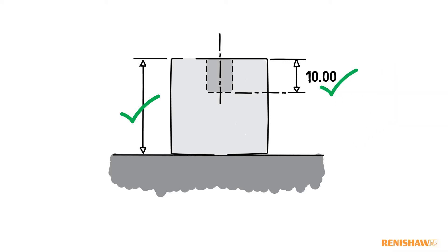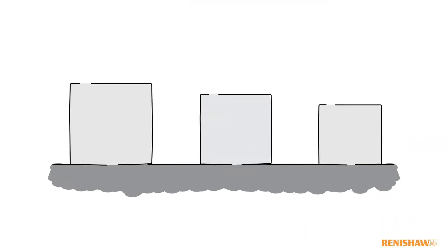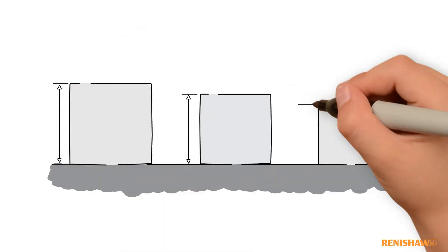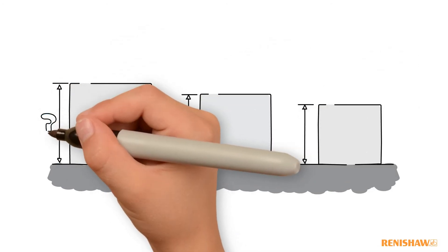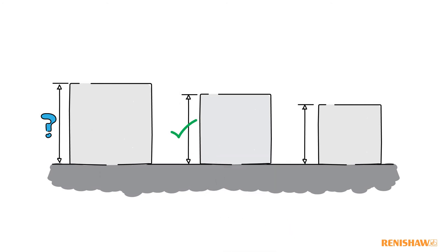Before we introduced the Renishaw probing system, our material was positioned on the machine bed and located using a fixture, however the material would sometimes vary in size.